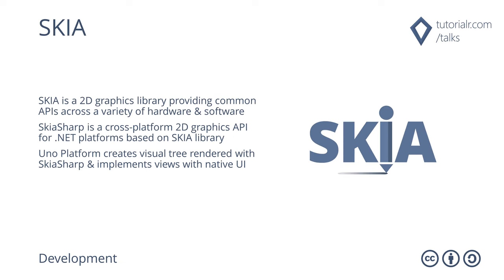Skia is a 2D graphics library providing common APIs across a variety of hardware and software platforms. SkiaSharp is a cross-platform 2D graphics API for .NET platforms based on the Skia library to render images. Uno Platform parses XAML into C Sharp to build the app's visual tree, rendering it completely with SkiaSharp with support for data binding, implementing views and controls using the native UI framework with shell support using GTK.